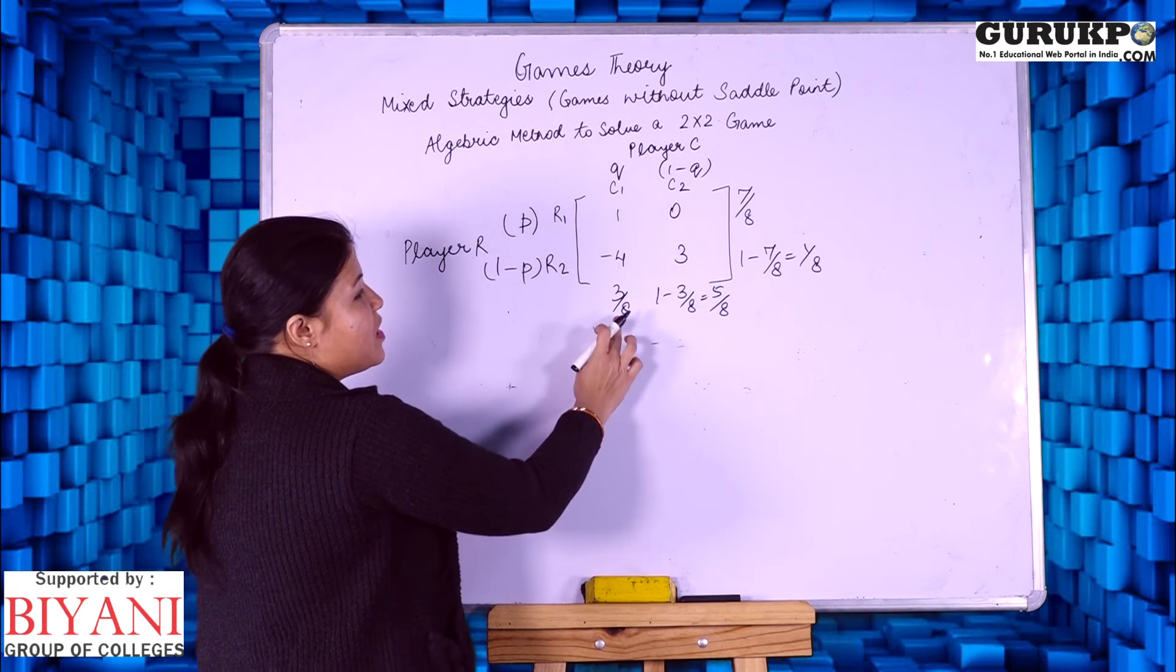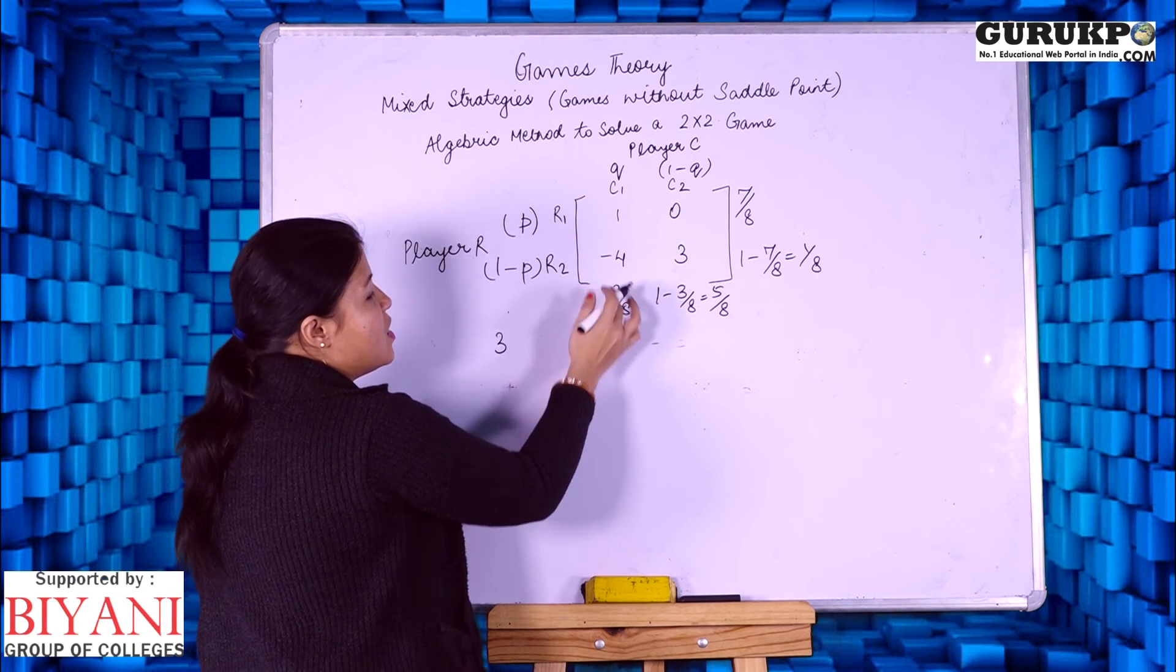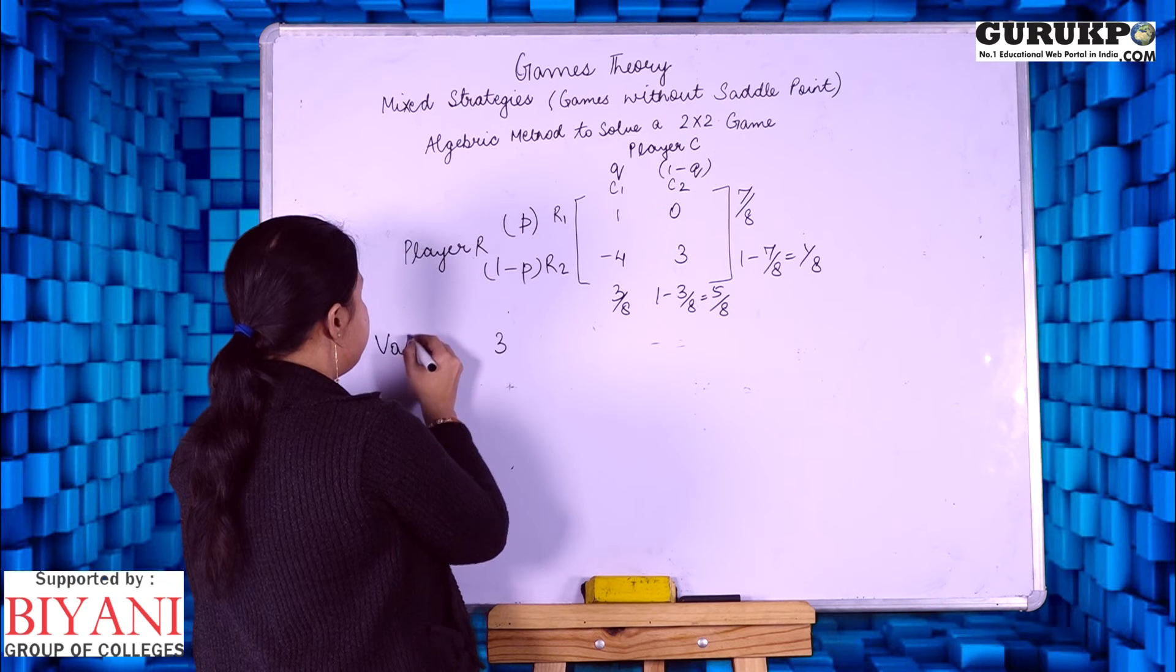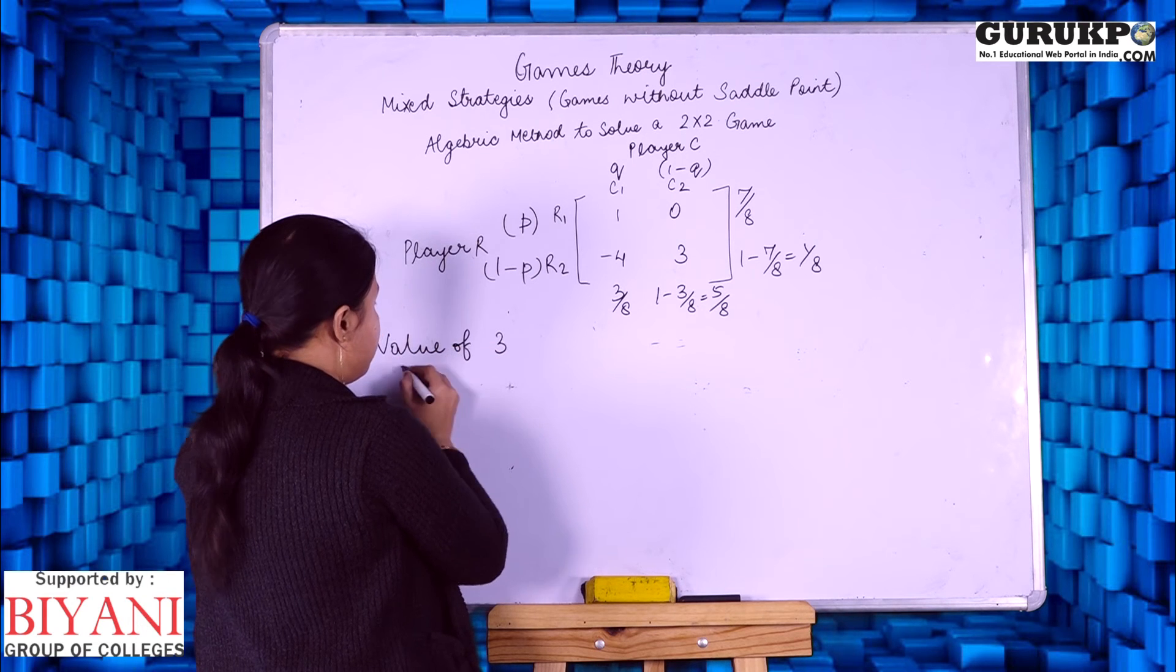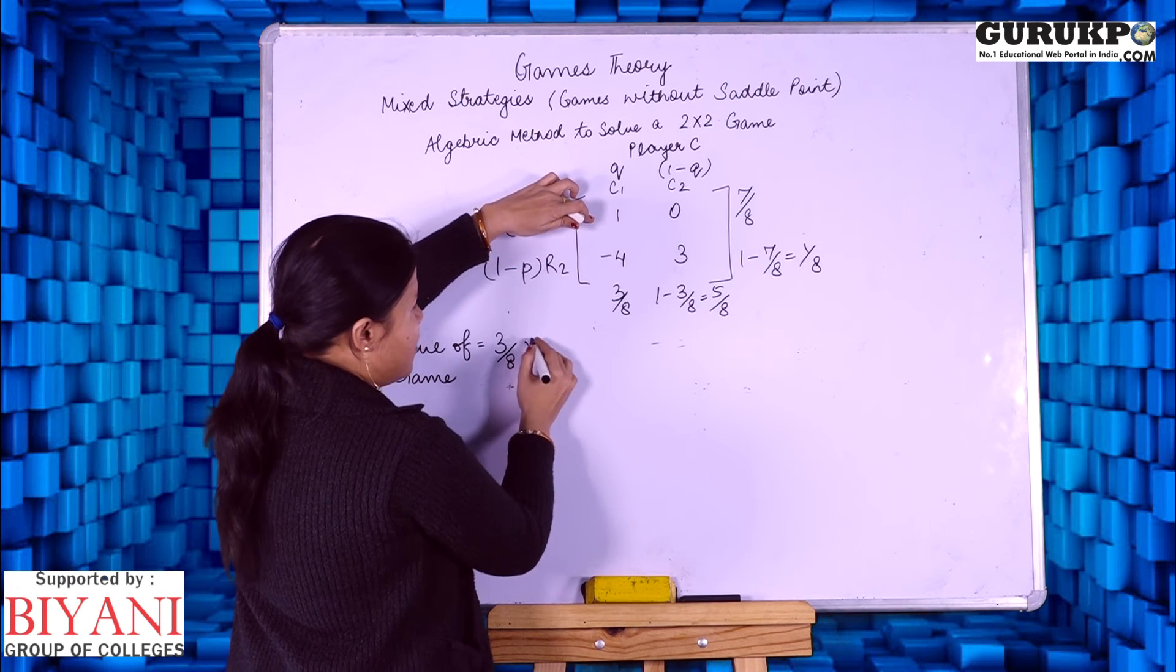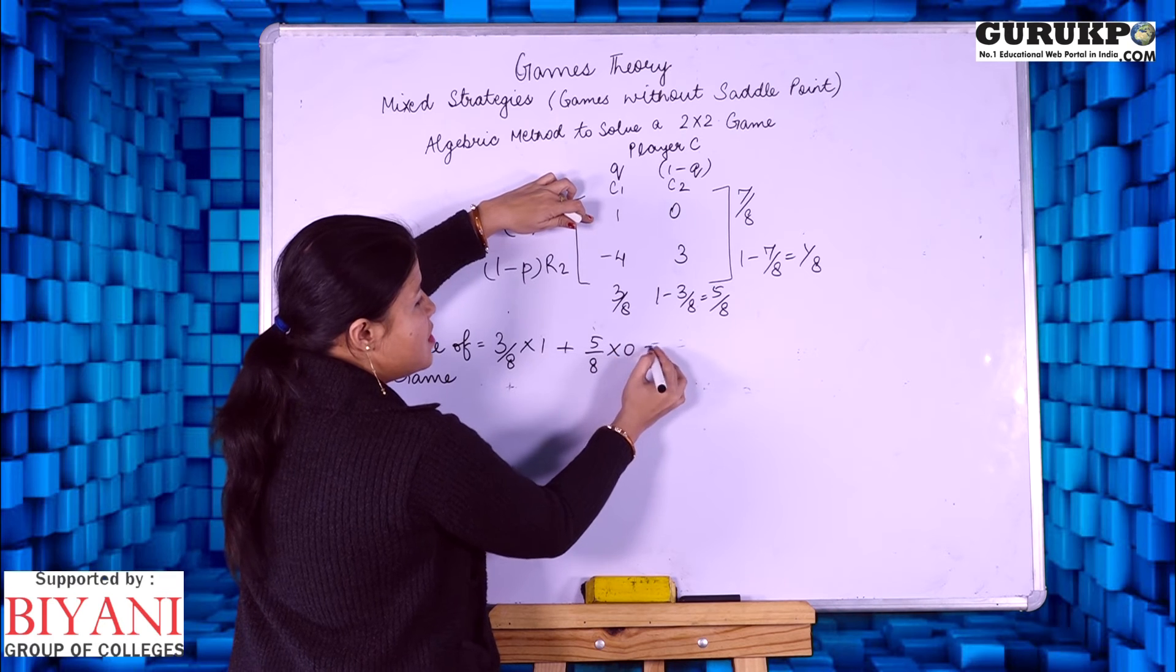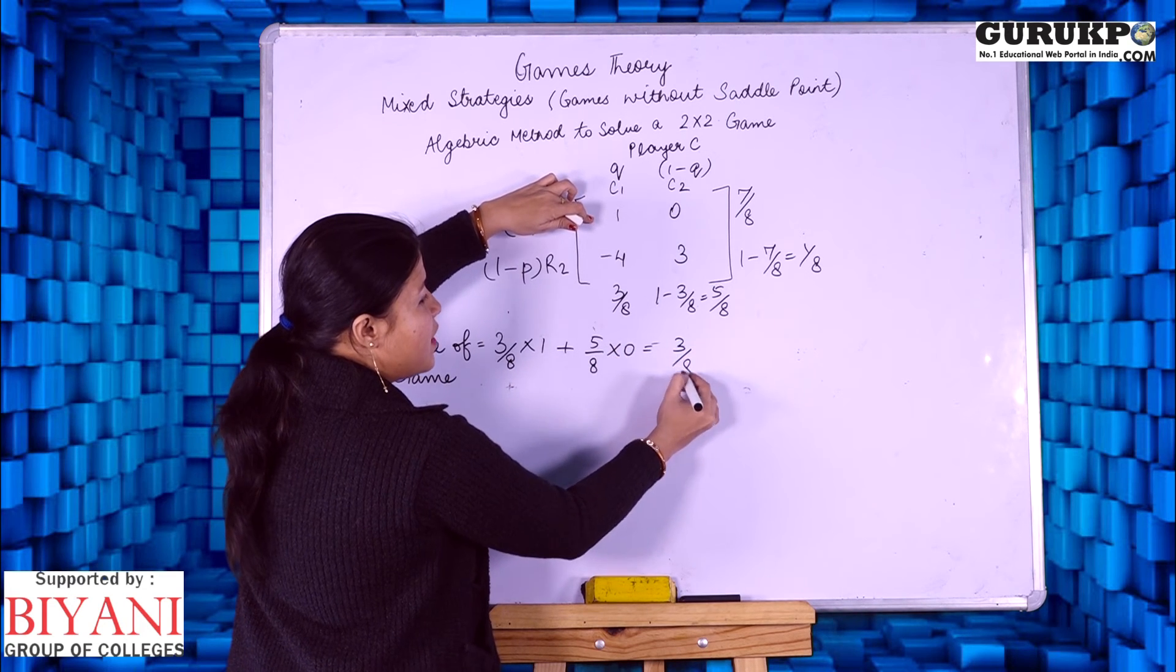For example, I am taking the strategy for column player: 3 by 8 into 1 plus 5 by 8 into 0. It comes to 3 by 8.